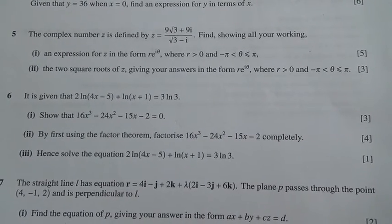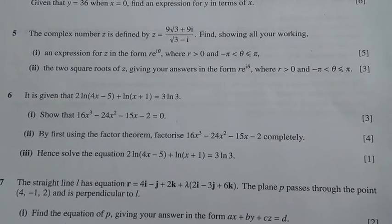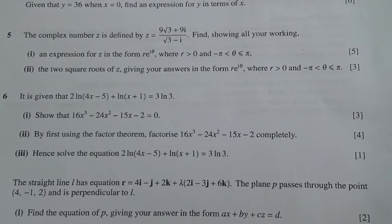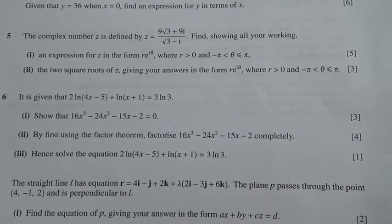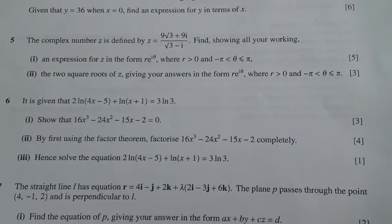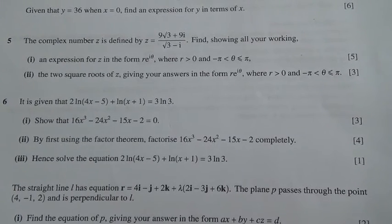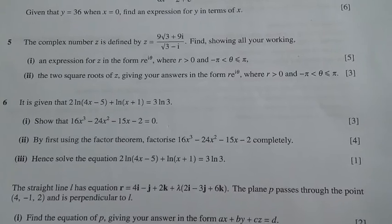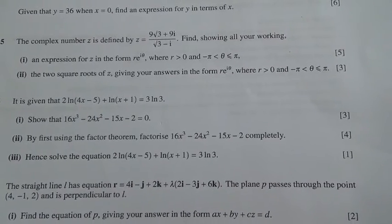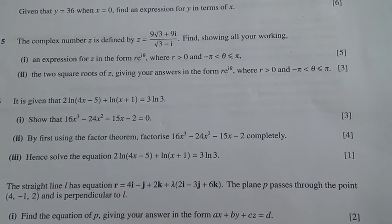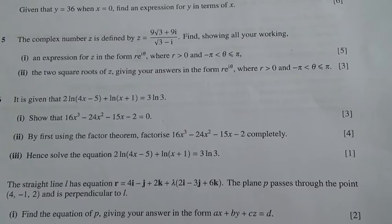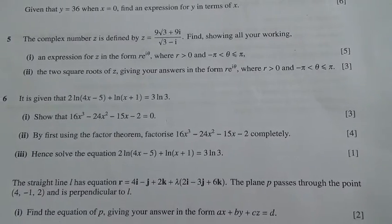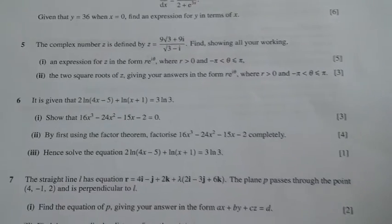For the second part, by first using the factor theorem, factorise 16x³ − 24x² − 15x − 2 completely, and hence, for the third part, solve the equation 2 ln(4x − 5) + ln(x + 1) = 3 ln 3.